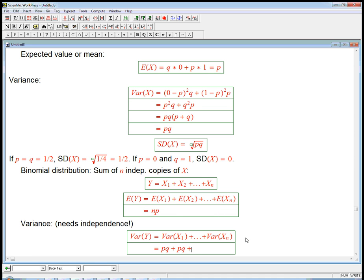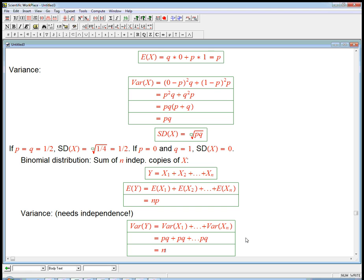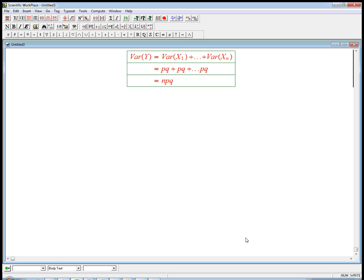We know the answer to that: PQ plus PQ plus PQ. How many copies? There's N of those. So it's NPQ. And the standard deviation, which is usually what we care more about, is just root NPQ. That's cool.